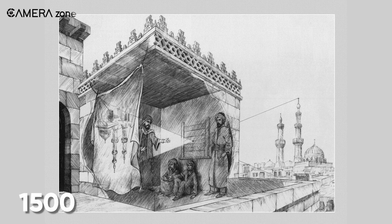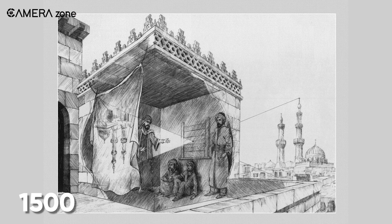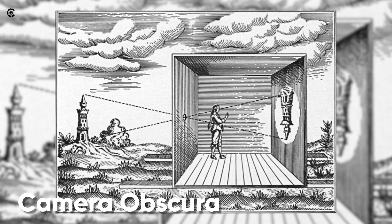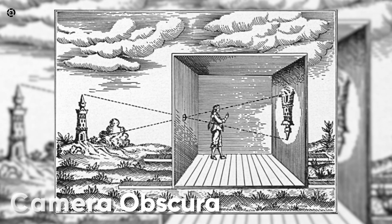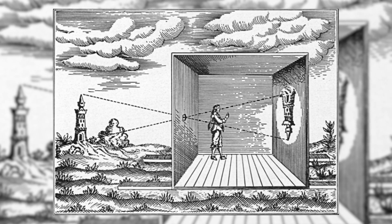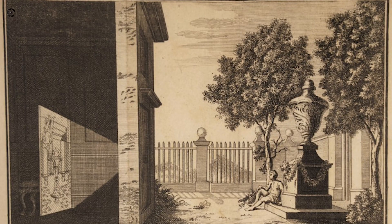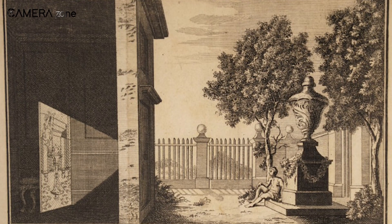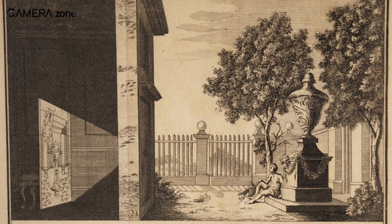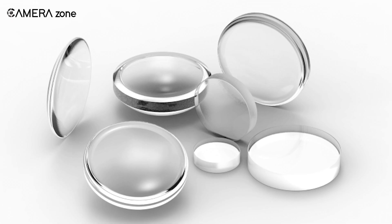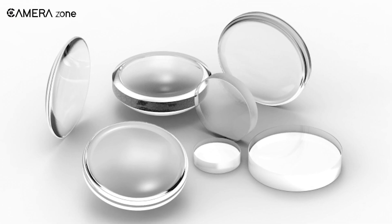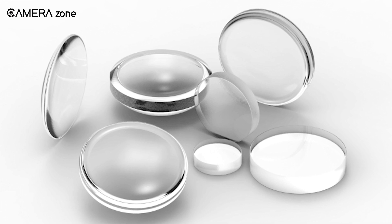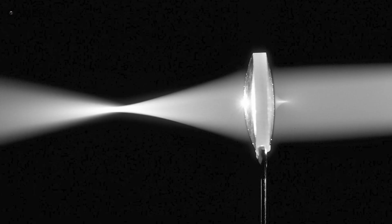Another major innovation during the 1500s was the camera obscura, which was basically a large room that had a lens mounted on a wall. This machine was capable of producing an image of an object positioned in front of the lens, and its researchers played a vital role in the development of lenses as they built a bi-convex lens for the machine.